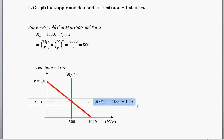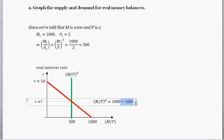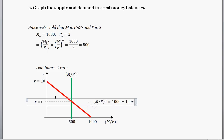We also need to graph the money demand equation: 1,000 minus 100 times the real interest rate. When the real interest rate equals 0, the 100R term goes to 0, giving money demand of 1,000 — that's the horizontal intercept. When money demand equals 0, solving for R gives us the vertical intercept. These numbers are simple and don't perfectly reflect the real economy, but they give a clear sense of what we're dealing with. So here we have money demand and money supply.